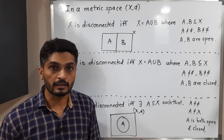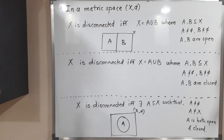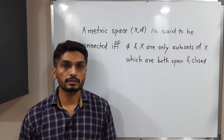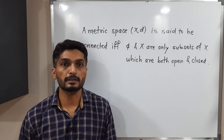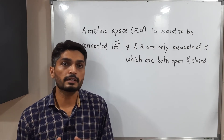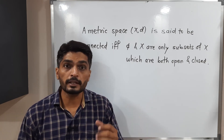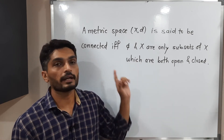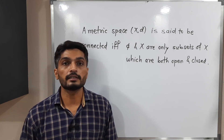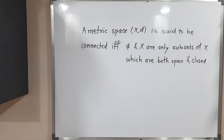Using this last equivalent definition of disconnected metric space, we get a beautiful definition of connected metric space. A metric space X is connected if the only subsets of X that are both open and closed are phi and X itself — there is no other clopen set. If that condition holds, we declare that metric space X is connected.